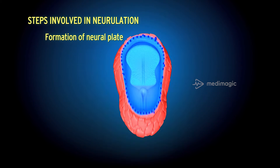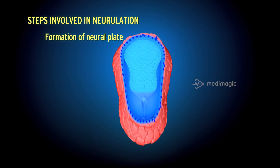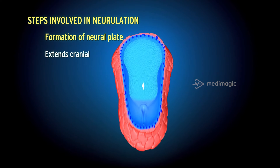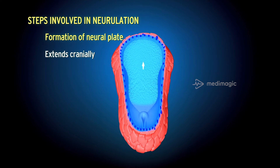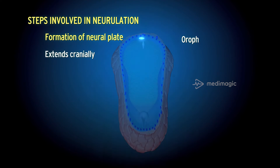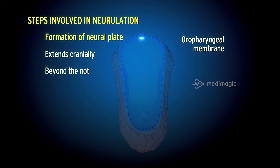In the early stages of development, the neural plate is the same length as that of the notochord. Eventually, it extends cranially as far as the oropharyngeal membrane and extends beyond the notochord.